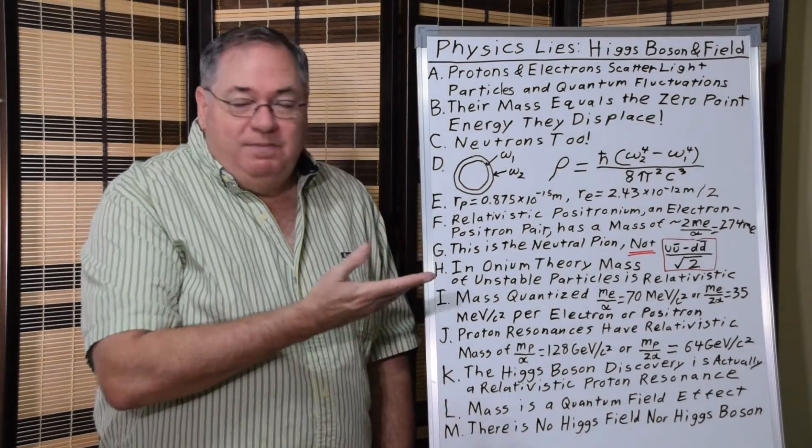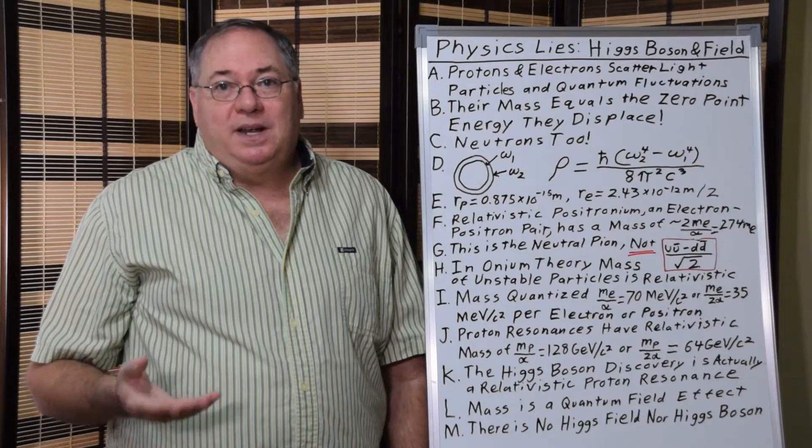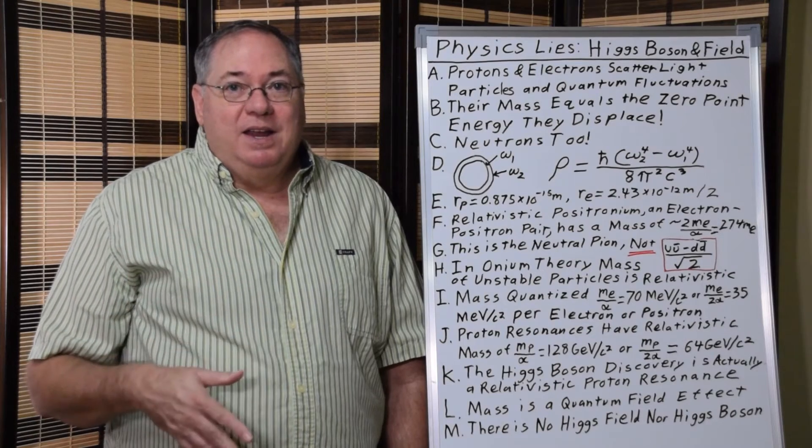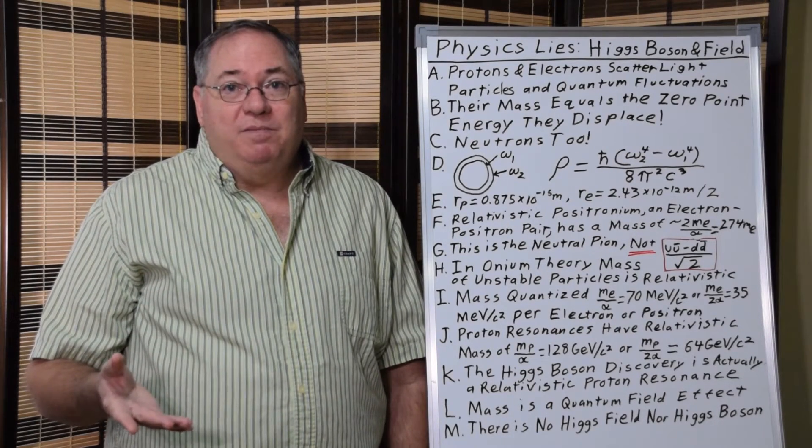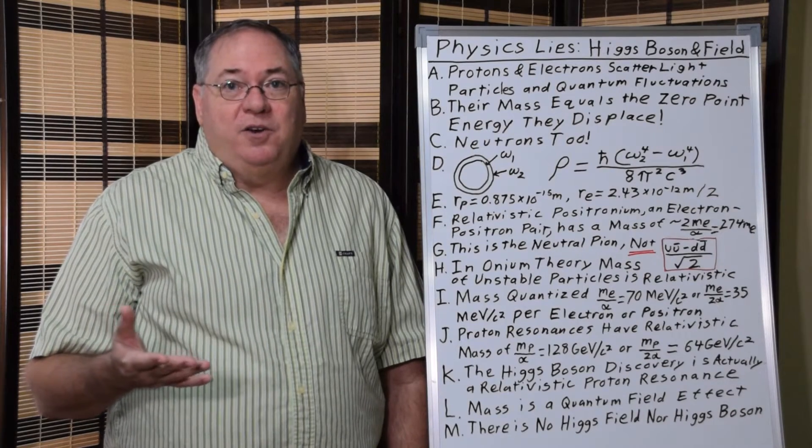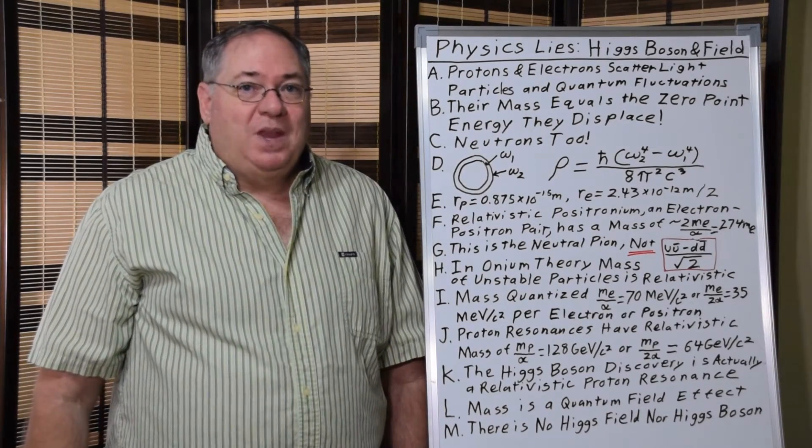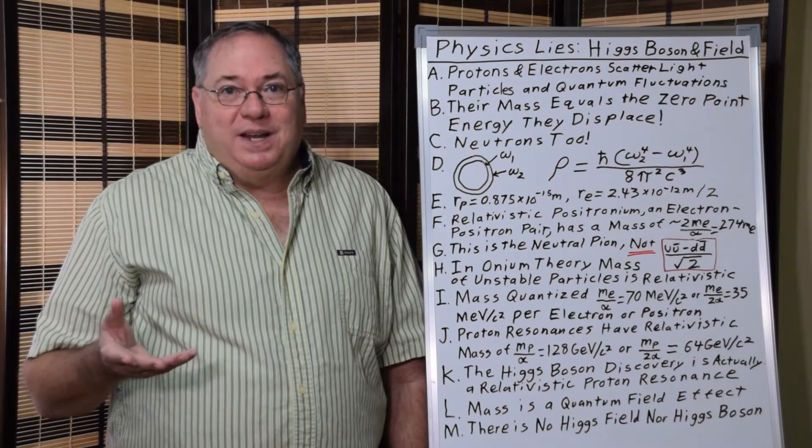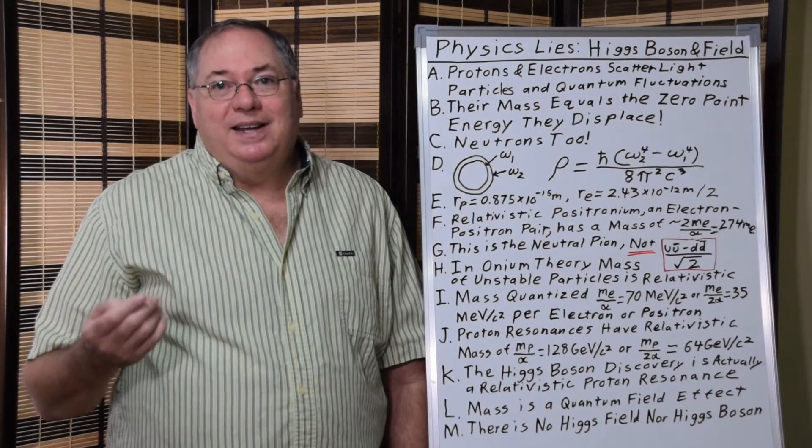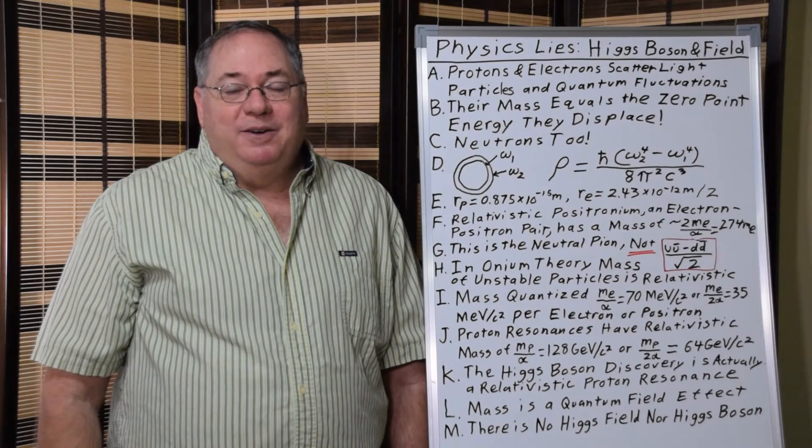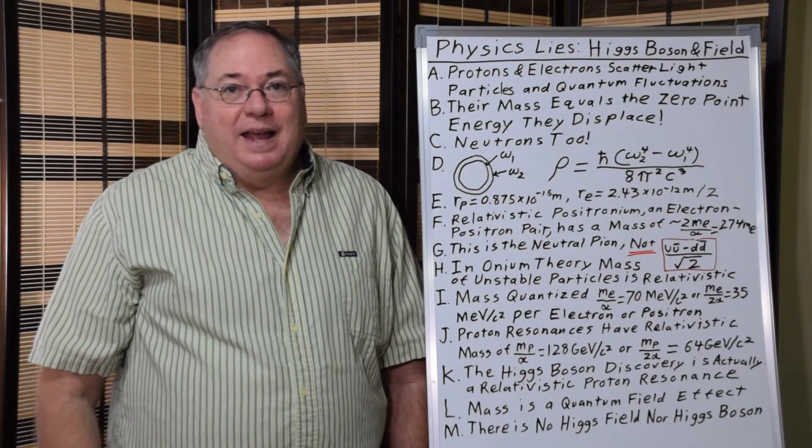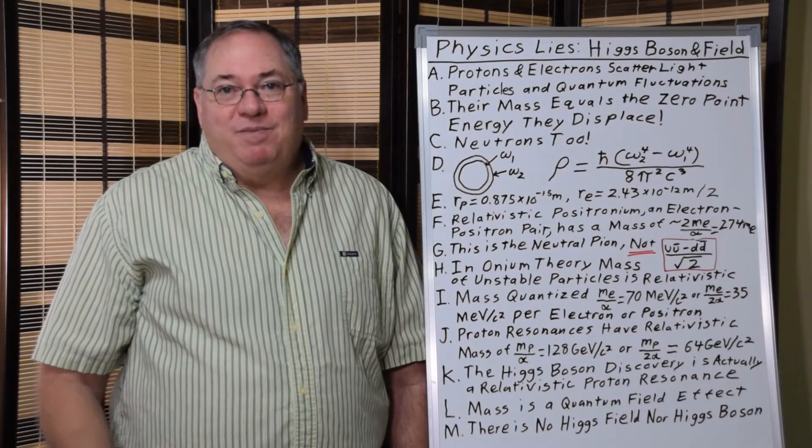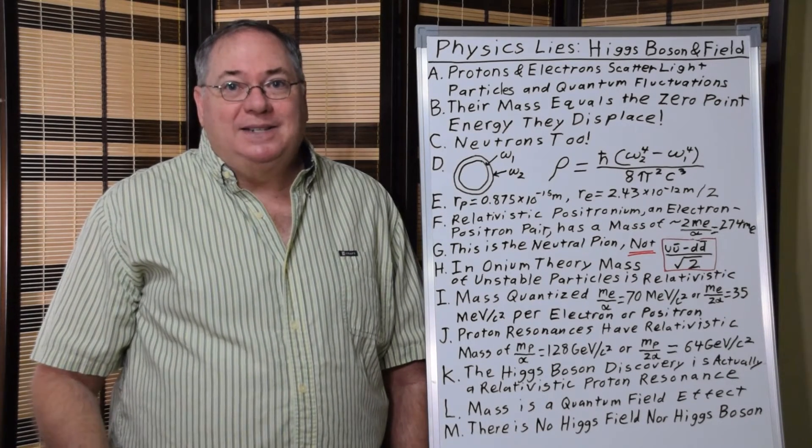So explaining the mass is quite simple. Higgs bosons and Higgs fields are totally unnecessary. All you need is a quantum field and relativistic mass, which is a type of quantum field energy related to the inertial energy of a moving particle. And so when you hear tales of Higgs bosons and Higgs fields, it's all a lie. And if you hear someone talking about that, you might bring up the point that the particle's mass is equivalent to the quantum field energy they displace, that mass is zero point energy.